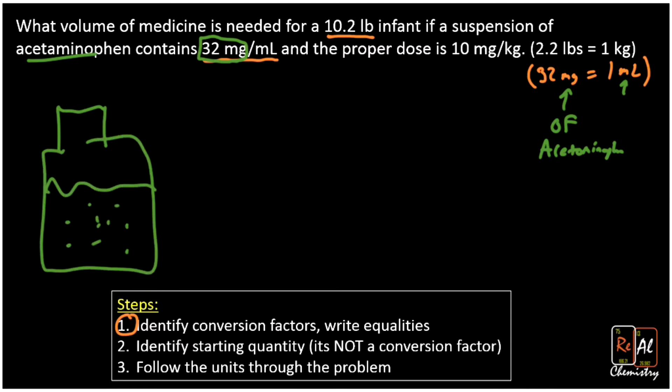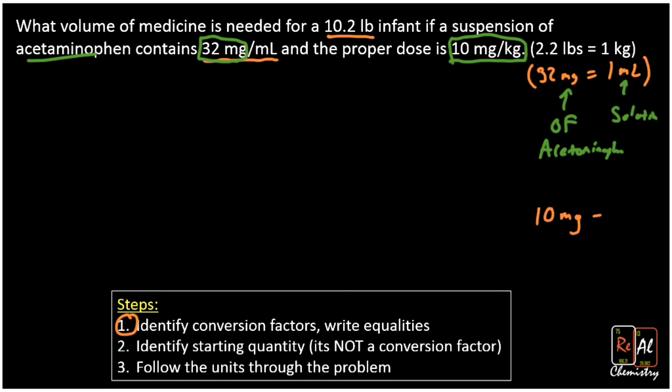And it has a bunch of Tylenol molecules in it. And what this is telling us is that for every milliliter of that liquid, there's 32 milligrams. So that milliliter there refers to our suspension, our solution. So that's one conversion factor that we have. And then we actually have another one. The second number here, 10 milligrams per kilogram also has two units. It's going to go between milligrams and kilograms. So 10 milligrams equals one kilogram.